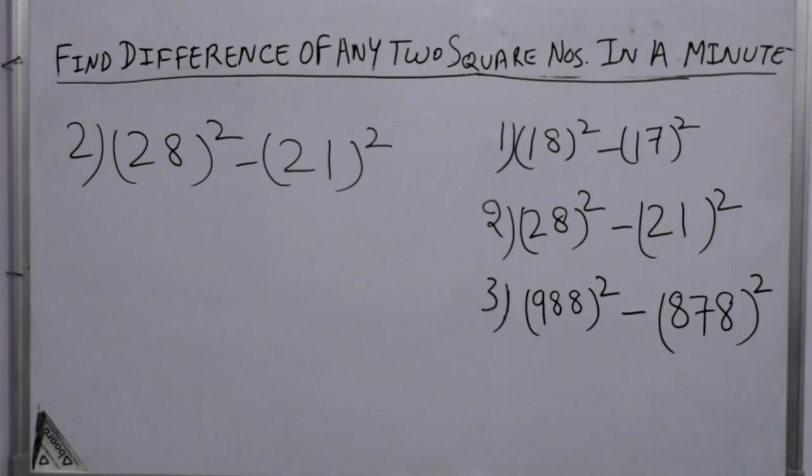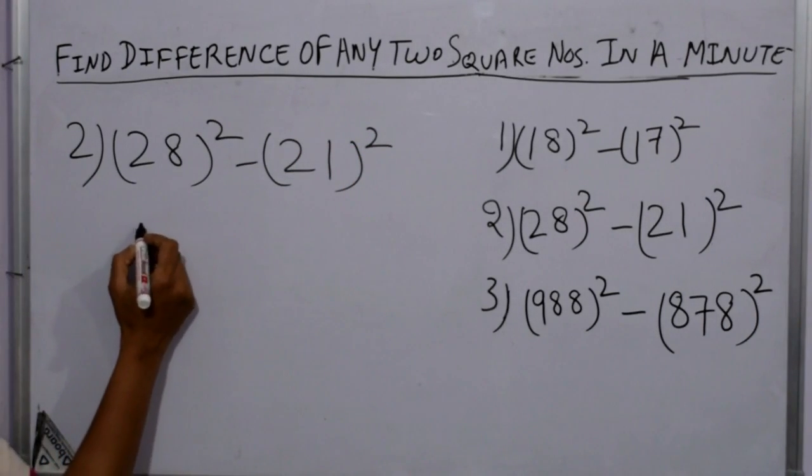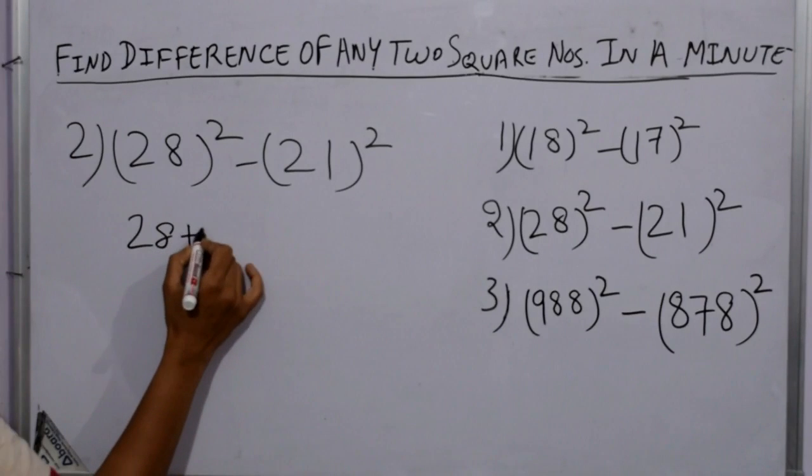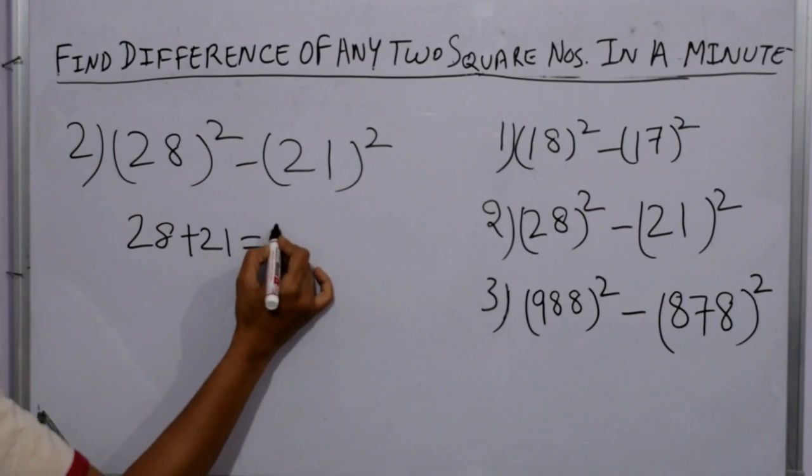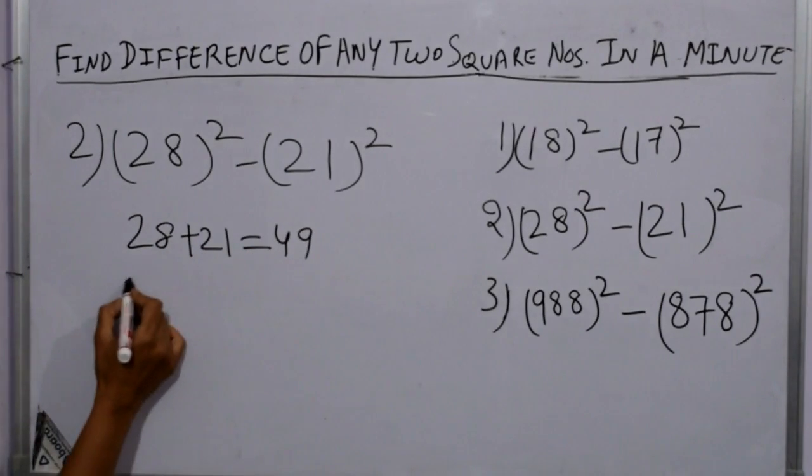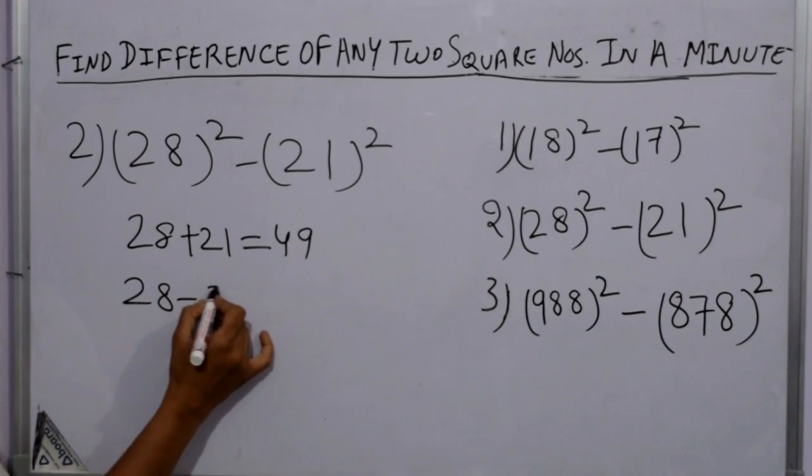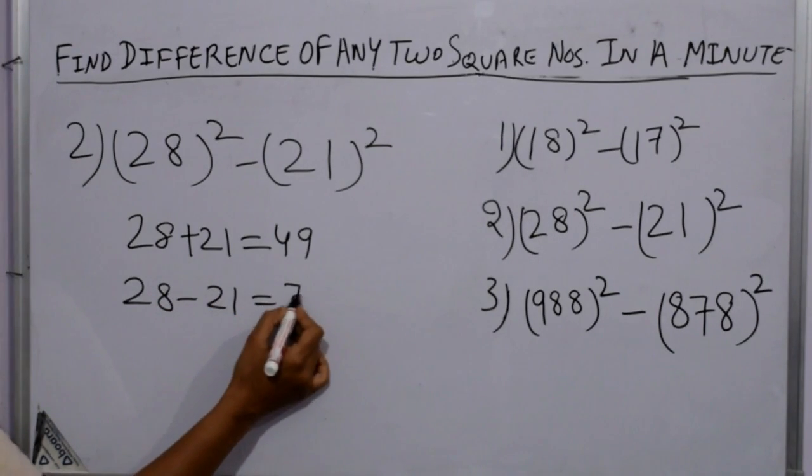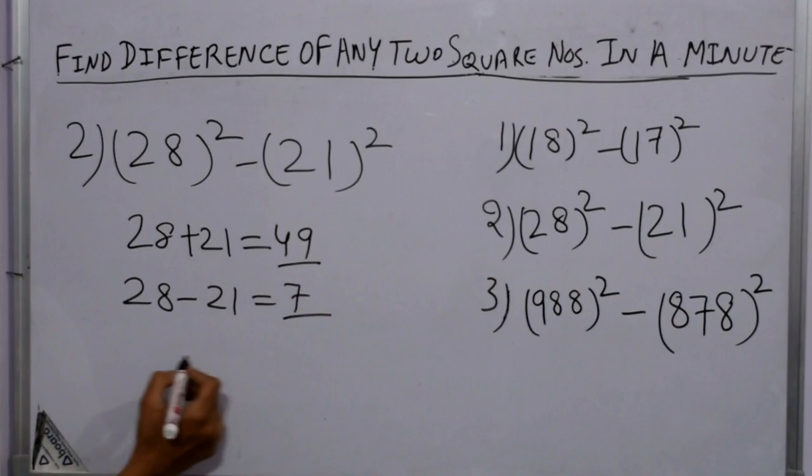Moving on to the second sum, just add 28 and 21, we got 49. Subtract 21 from 28, we got 7. Now multiply 49 and 7.